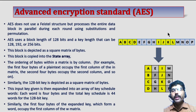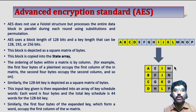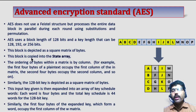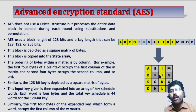In AES we treat or depict the block as a square of bytes. Our block length is 128 bits, that is nothing but 16 bytes. We depict our data as a 4 by 4 matrix. Each row contains 4 bytes and totally we have 4 rows. The block is copied into a state array — a temporary memory used by this algorithm. We place our plain text into that state array in a particular order, as explained in this diagram. The ordering of bytes within the matrix is by column.